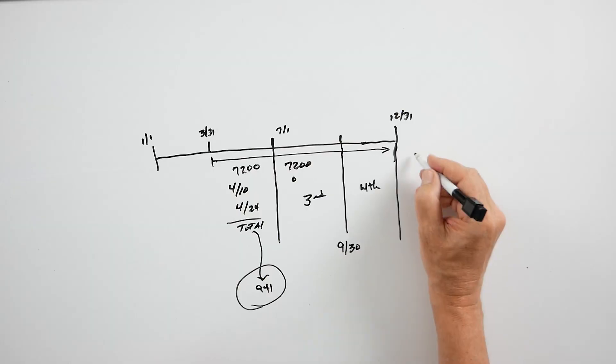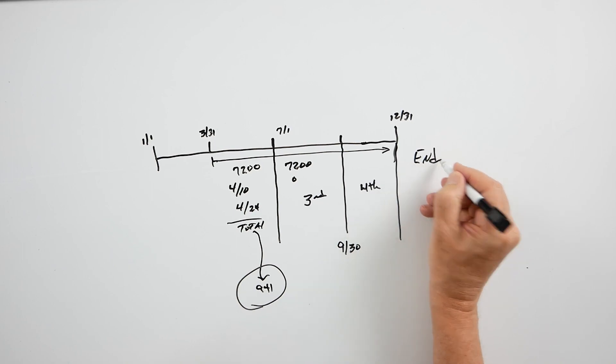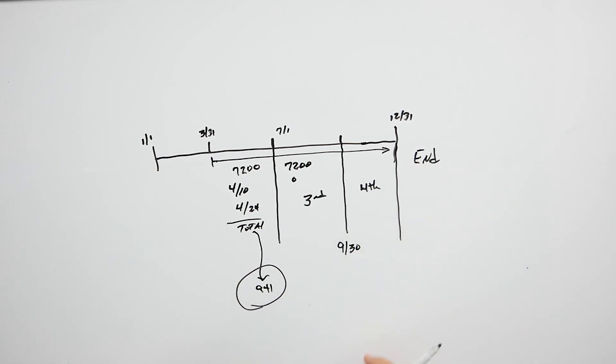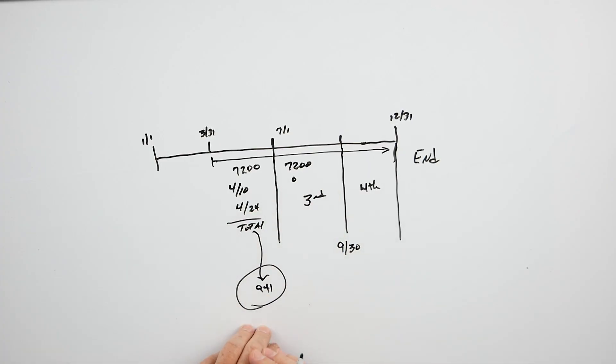Each quarter we have to reconcile, and then at the end of the year we reconcile the total. I used the example of the 941, but the same applies to the 940, 943, 944, and CT-1. Most importantly, as a small business we need the cash flow, and this is a real good assist in cash flowing.